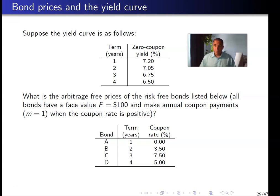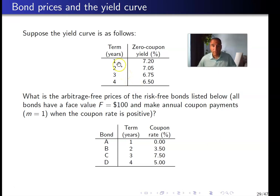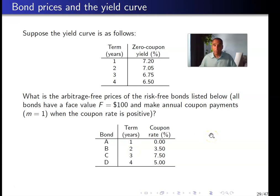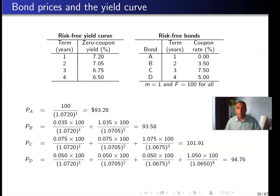Now we'll cover the yield curve and the calculation of bond prices using the yield curve. We are given a yield curve with four years and four bonds with different coupon rates: one bond with one year to maturity, another with two years to maturity, and so on. The question is: what is the correct bond price for each of these bonds?